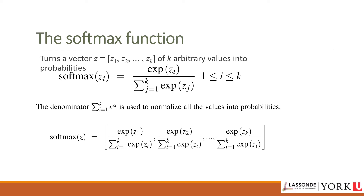The softmax function takes a vector z from z_1 to z_k of k arbitrary values and maps them to a probability distribution where each value is in [0, 1] and all values sum to 1. Like the sigmoid, it is exponential. For a vector z of dimensionality k, softmax is defined as: softmax(z_i) = exp(z_i) / Σ_{j=1}^{k} exp(z_j). The full softmax output vector is [exp(z_1)/Σexp(z_i), ..., exp(z_k)/Σexp(z_i)].